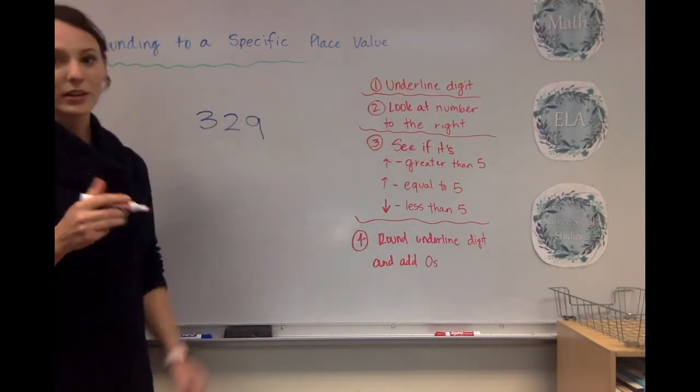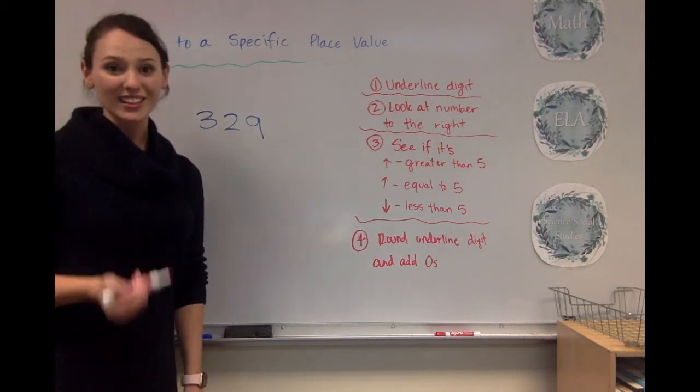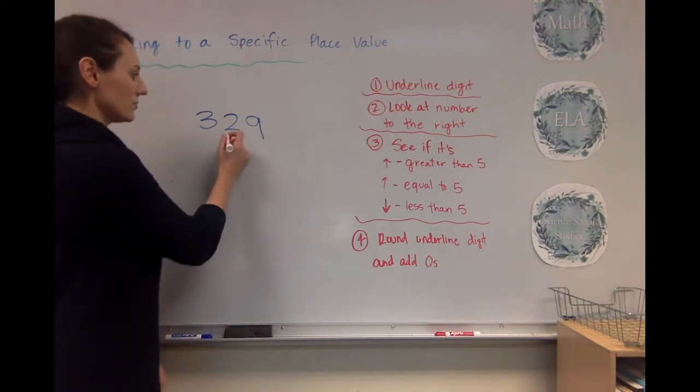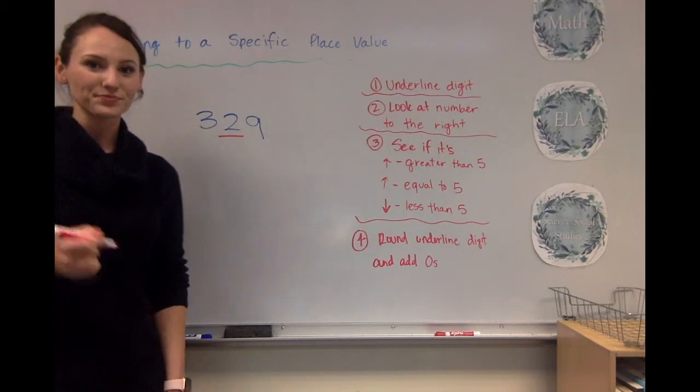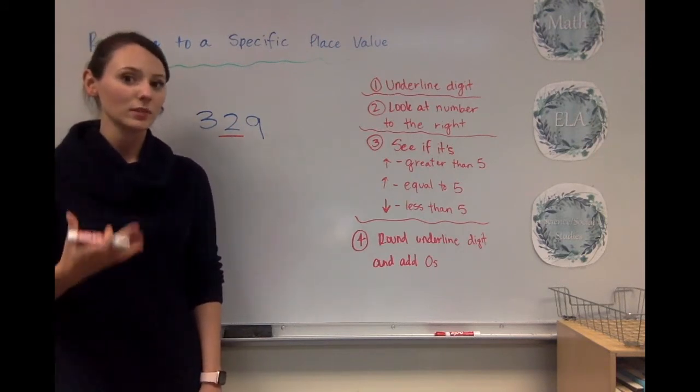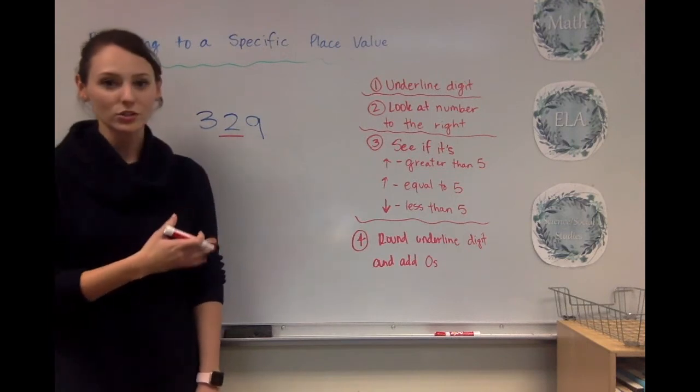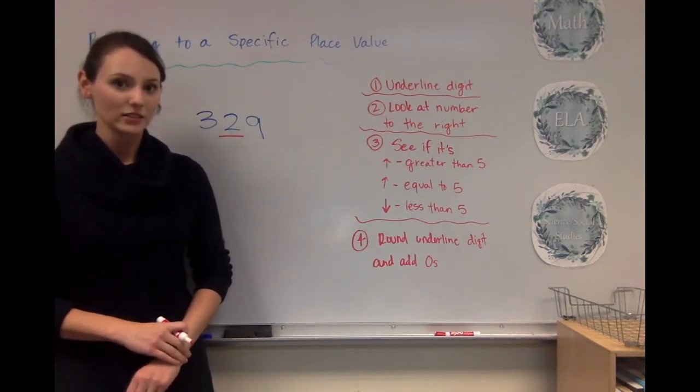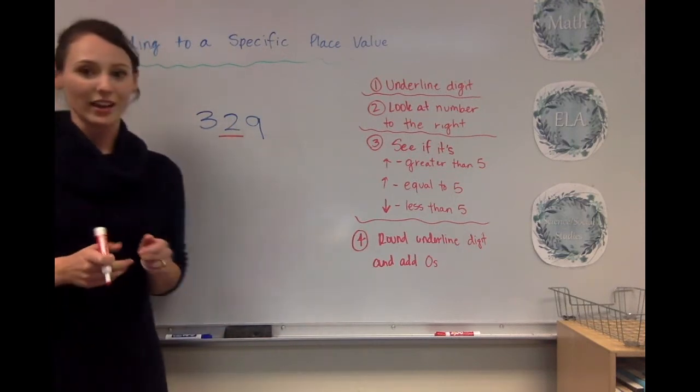So step number one, I'm going to underline the digit that's in the tens place. And in this case, that's the two. So I underlined the digit that I'm looking at. So rounding 329 to the closest ten, we're going to underline the tens place.